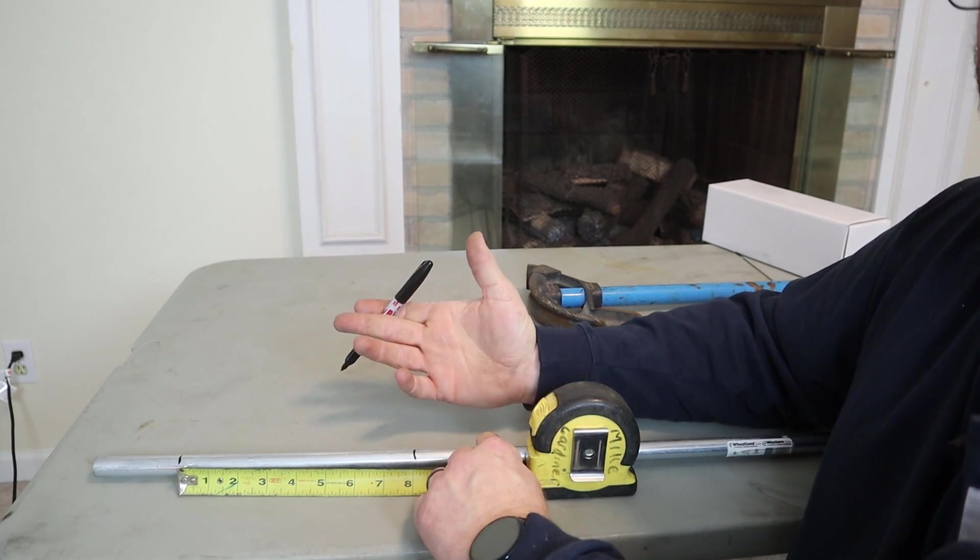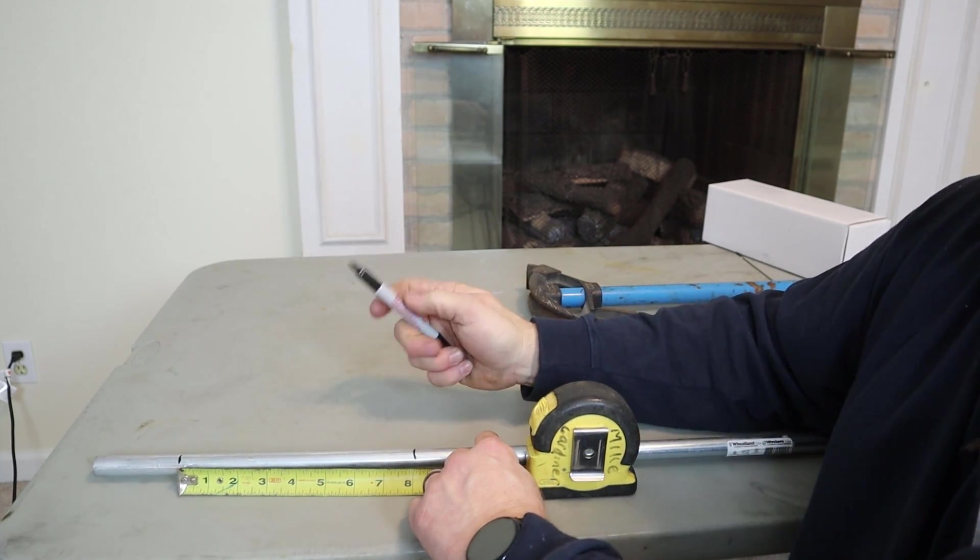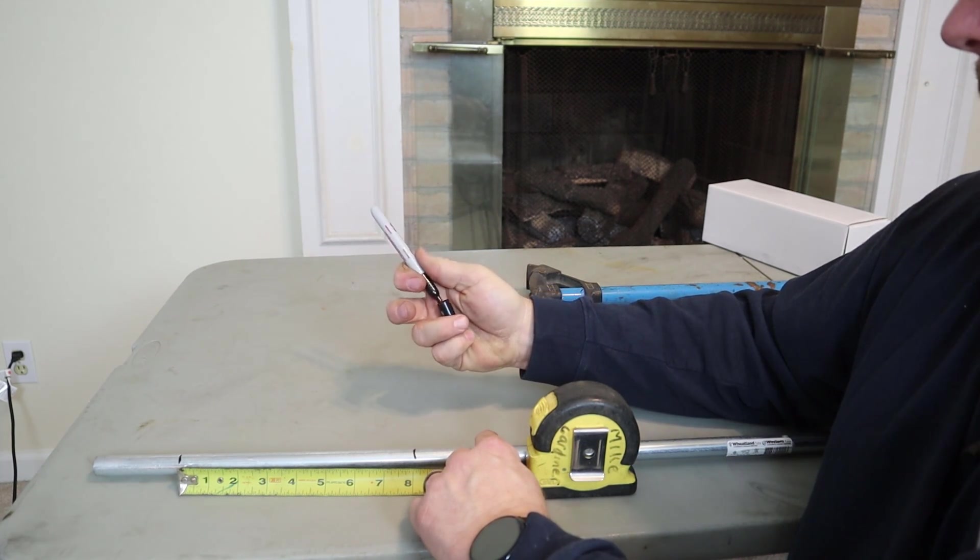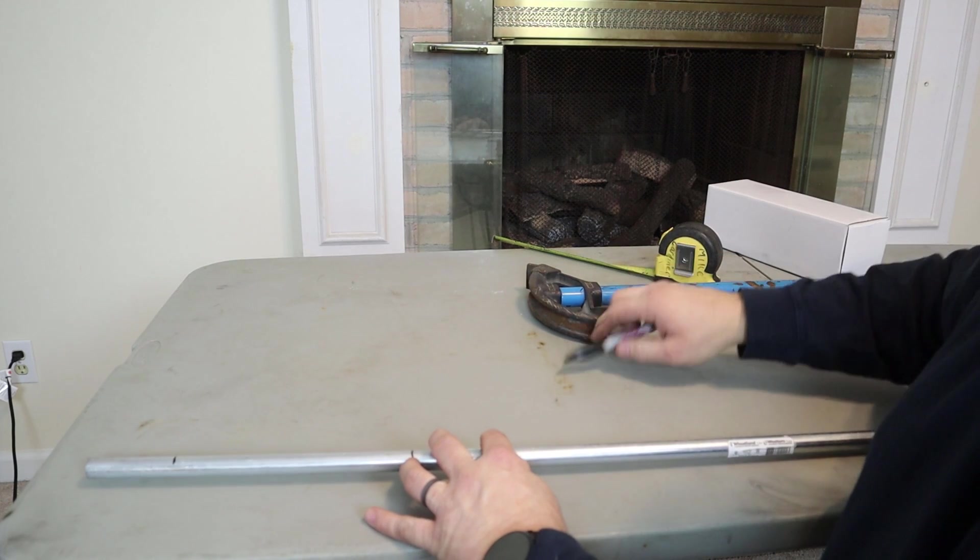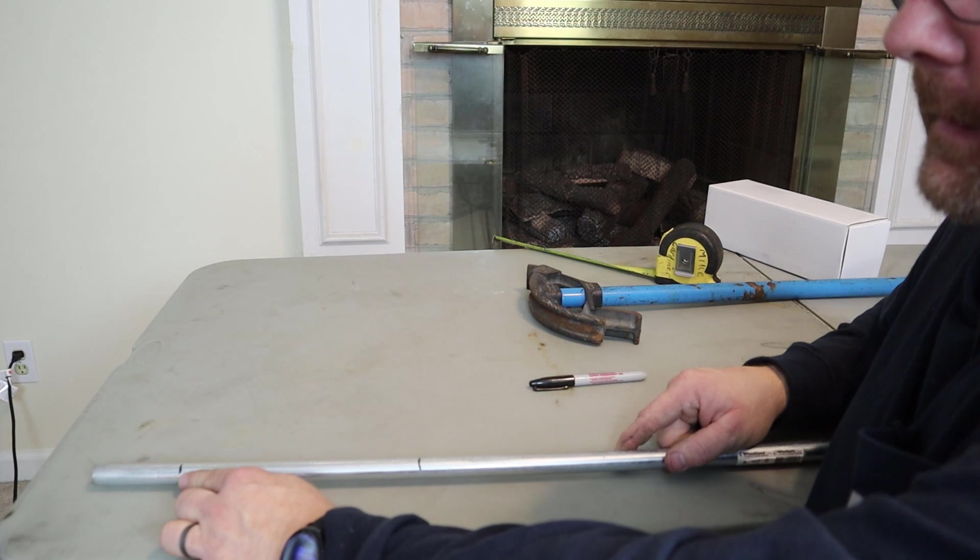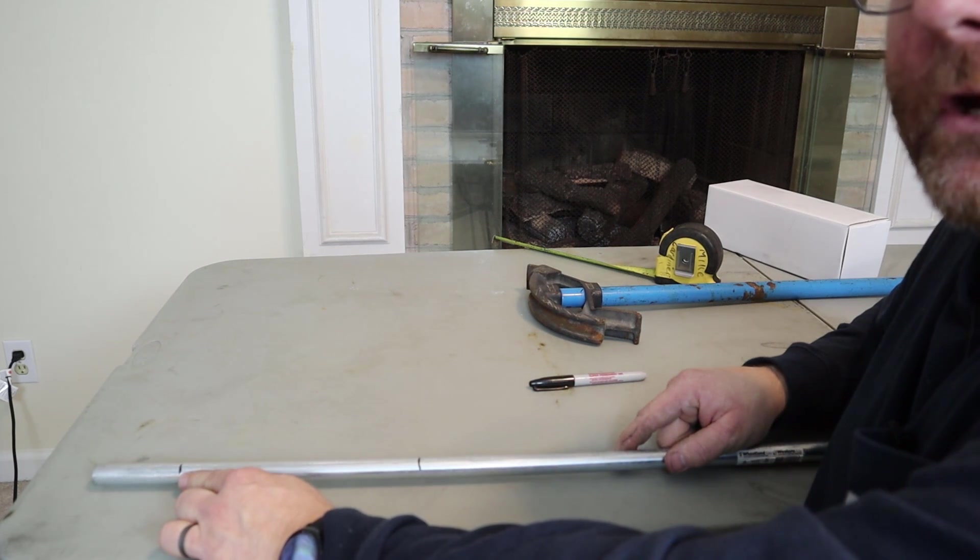I recommend using a pencil, but it's really up to you. All my life, I've only used Sharpies and never really had an issue with it. Having said that, we're going to put this back in the bender. We're going to put this mark right here at the arrow and bend to 30 degrees.